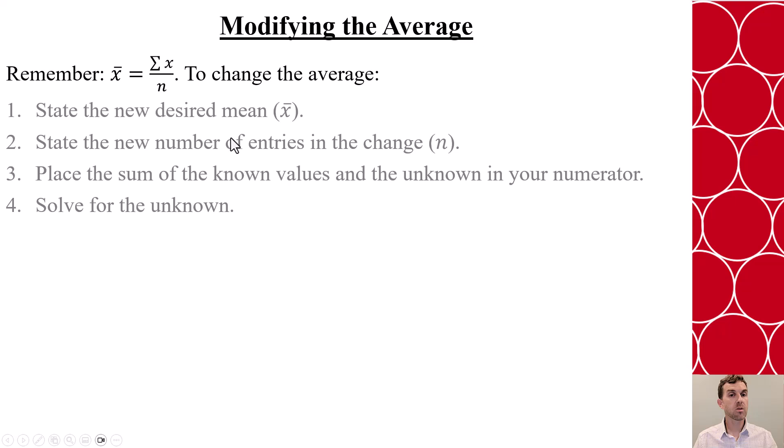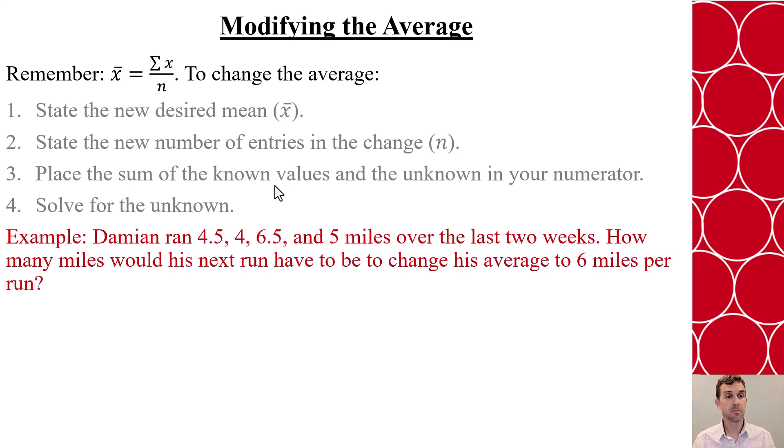To do this, we start with our new desired mean. We're going to replace that in our equation. Then we got our new number of entries. We'll replace that in our equation. And then we're going to add up all the values we know plus our unknown will go into that numerator. And we'll solve for that unknown value.